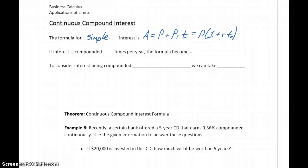If we have a situation where interest is being compounded n times a year, so yearly, monthly, daily, by the minute, our formula becomes A equals P times 1 plus R over n to the nt power.